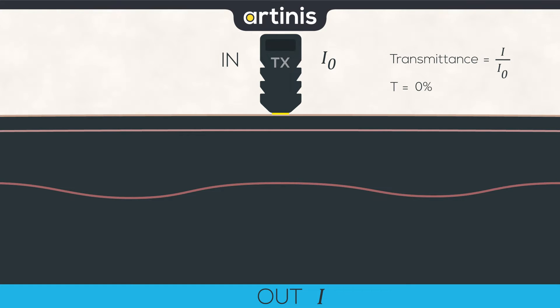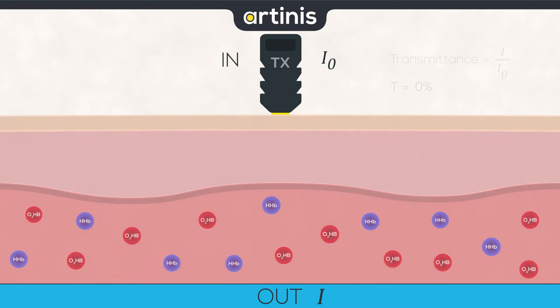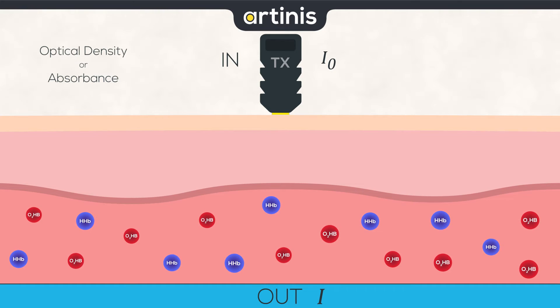Fortunately for us, the human tissue is neither completely clear nor completely opaque. Therefore, a certain amount of light is absorbed by the chromophores in our tissues. The formula then becomes optical density, also known as absorbance—the terms are used interchangeably—which equals the logarithm of the incoming light divided by the outgoing light. This is the first half of the formula that we use for our near infrared spectroscopy devices.